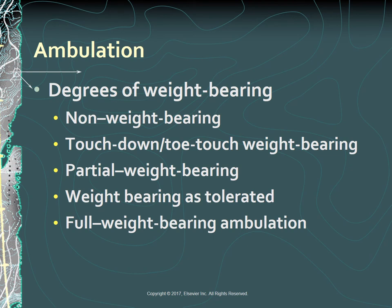When the patient begins to ambulate, know the patient's weight-bearing status and the correct technique if the patient is using an assistive device. There are different degrees of weight-bearing ambulation: non-weight-bearing, where no weight is placed on the involved extremity; touch-down or toe-touch weight-bearing, where contact with the floor is for balance but no weight-bearing; partial weight-bearing, where 25% to 50% of the patient's weight is tolerable; weight-bearing as tolerated based on the patient's pain; and full weight-bearing, where there are no limitations.